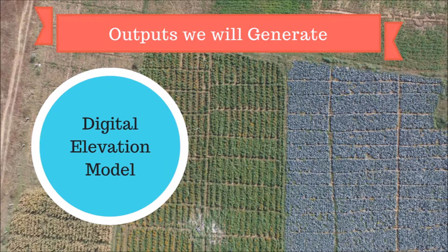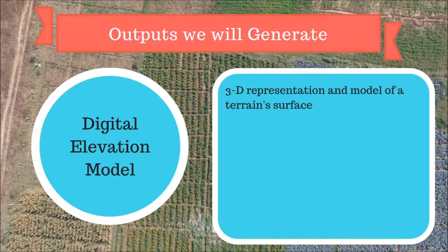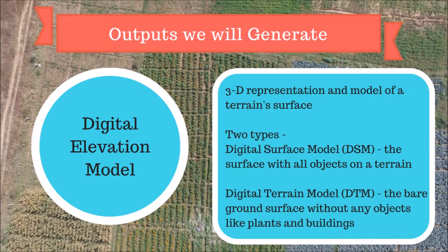The next important output we generate is the digital elevation model. A digital elevation model or DEM is a digital model or a 3D representation of the terrain surface. There are two types of digital elevation models. First, the digital surface model or DSM. This represents the surface with all objects on it — for example, buildings, trees and other structures.